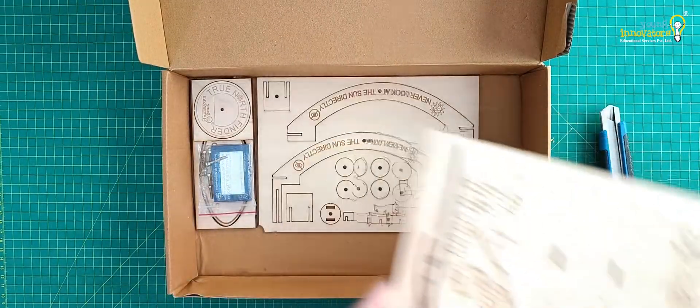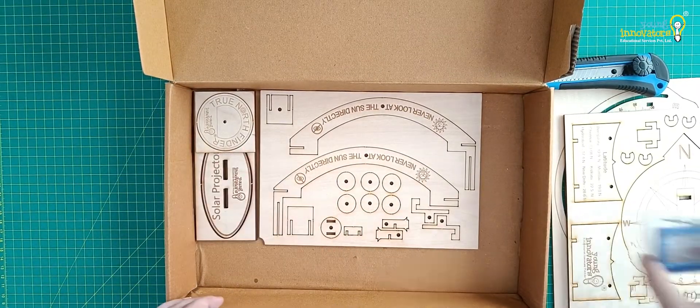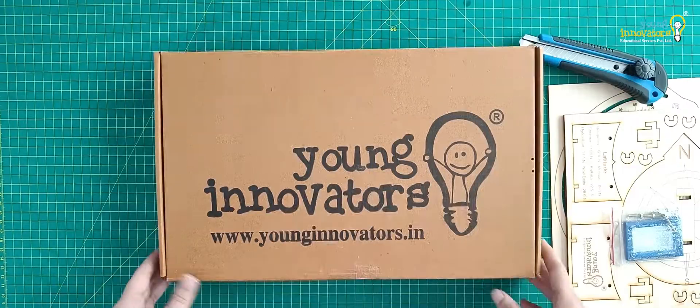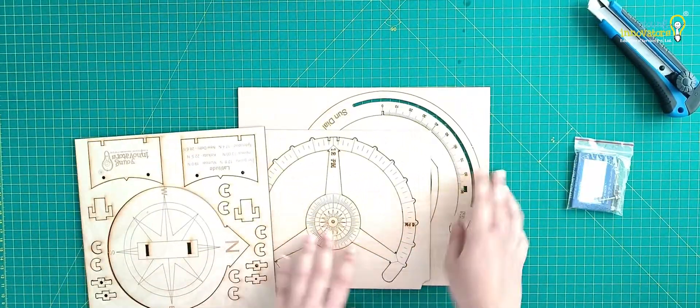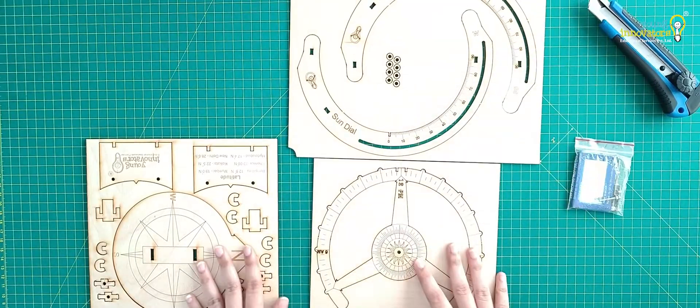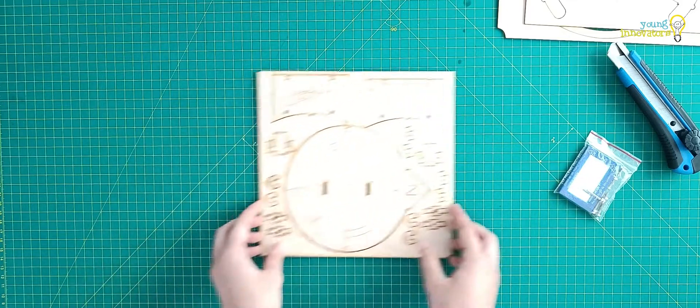Take out the sundial material from the kit along with the screws packet. Keep the base plate for assembly and the rest aside.